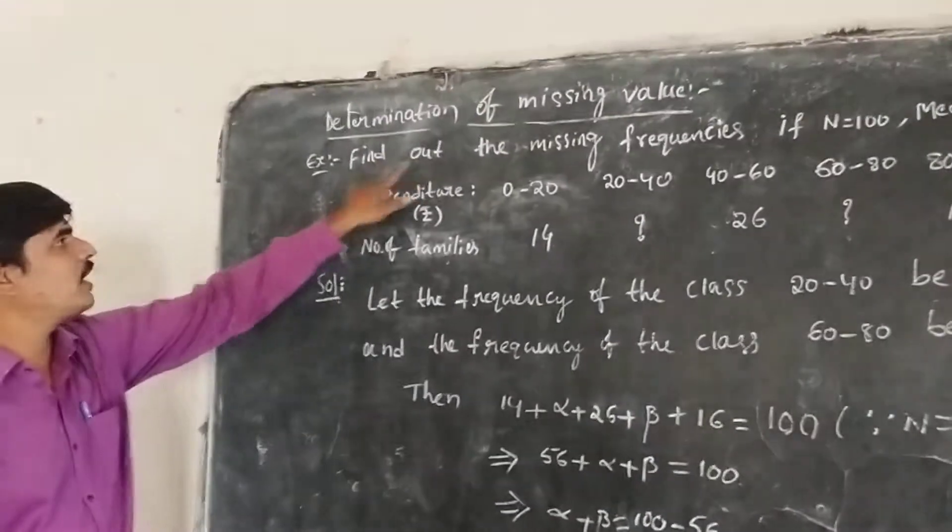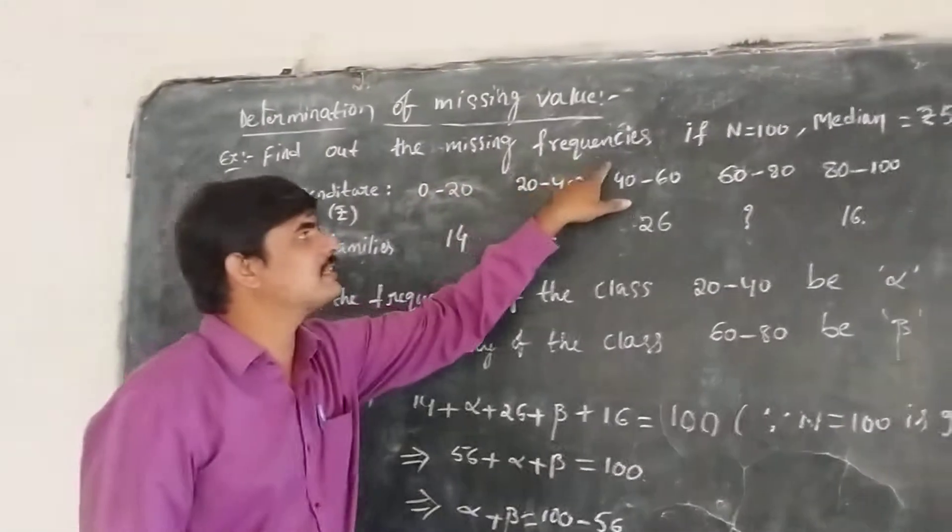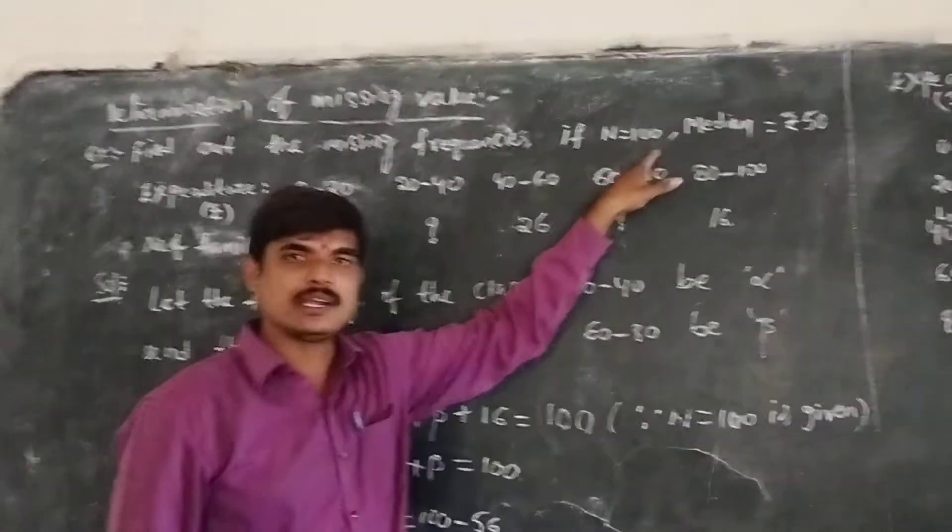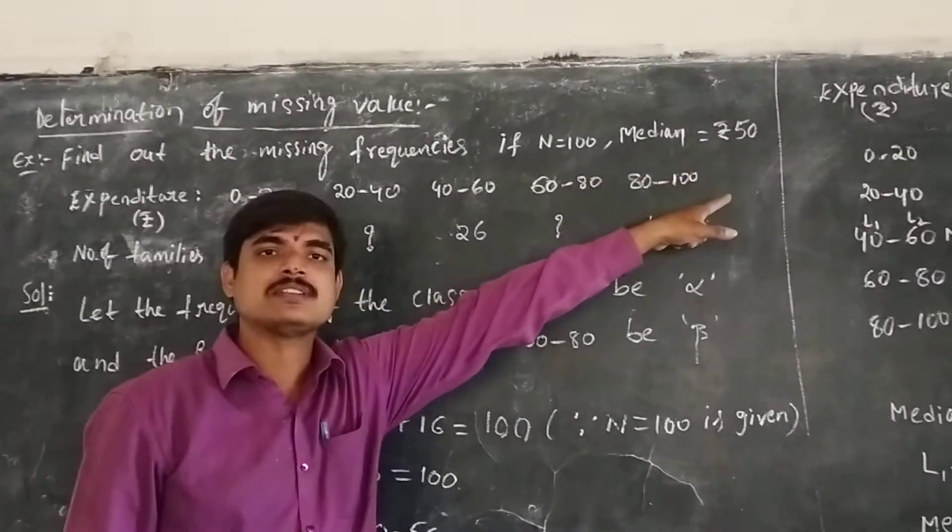Coming to the question: find out the missing frequencies if N equals 100 and the median is given as 50 rupees.